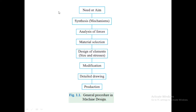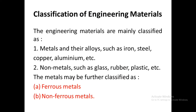Modifications are also made at this stage so that no production mistakes or errors will occur. Then a detailed drawing of the entire design is drawn, and the design is given for production in the industry.